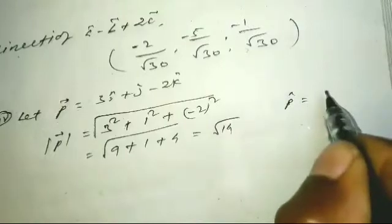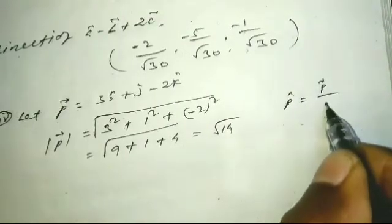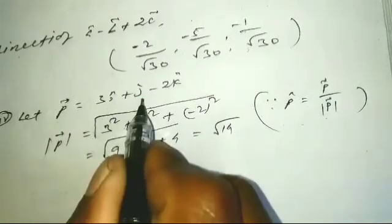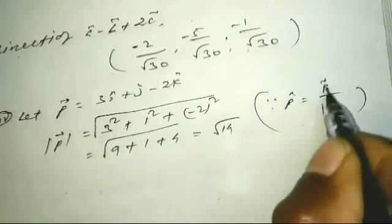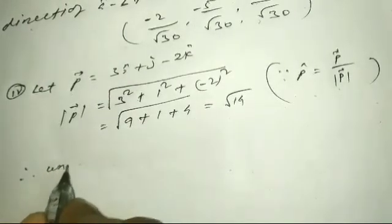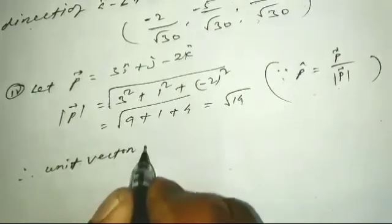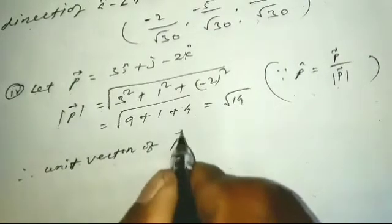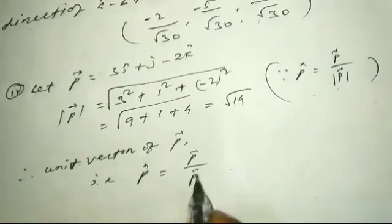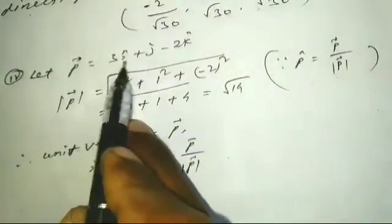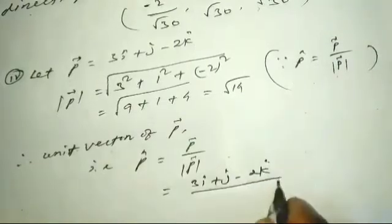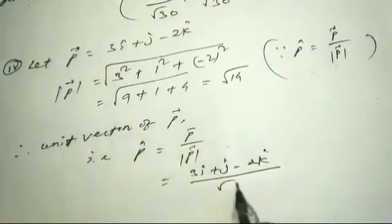Now, p-cap is p vector divided by magnitude of p vector. The unit vector formula gives: p-cap equals (3 i-cap plus j-cap minus 2 k-cap) divided by square root of 14.